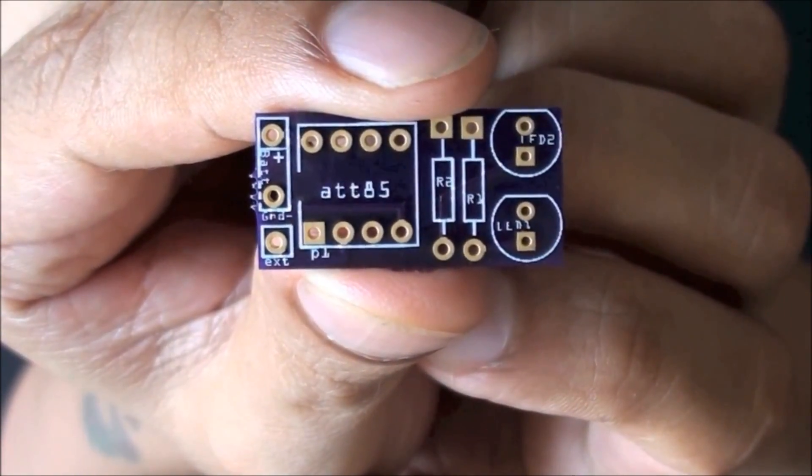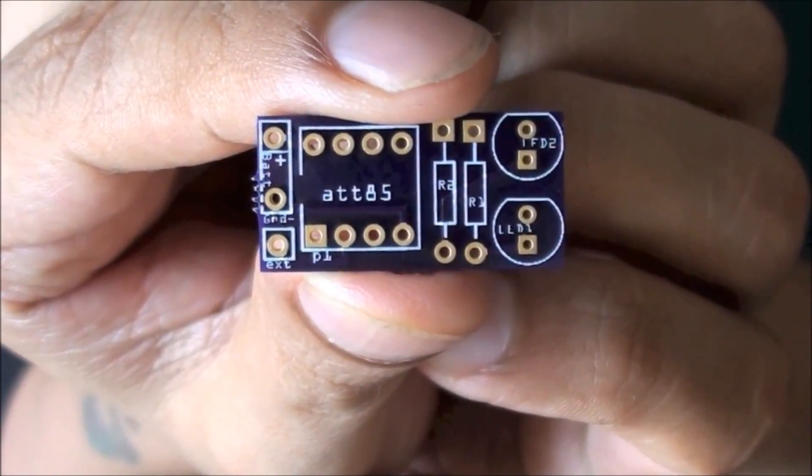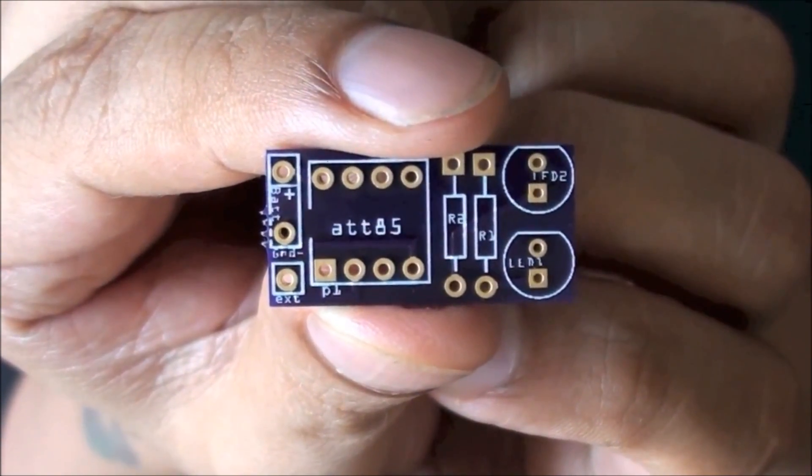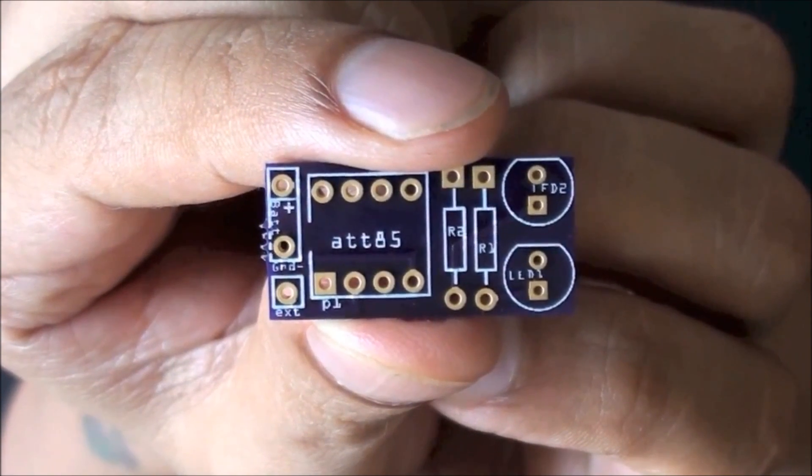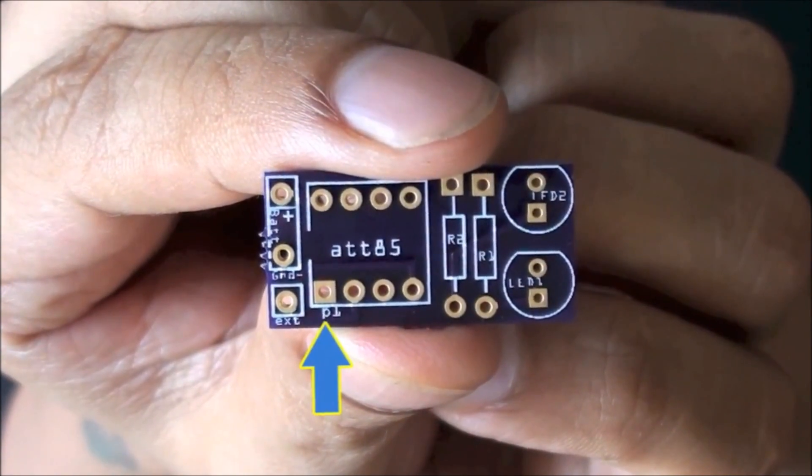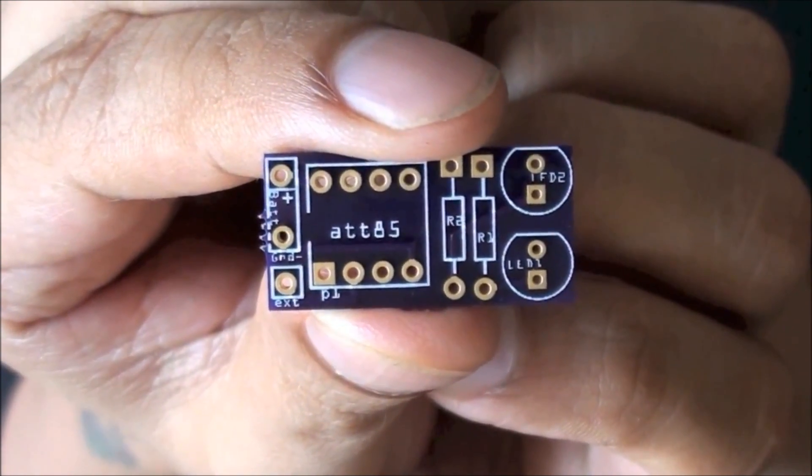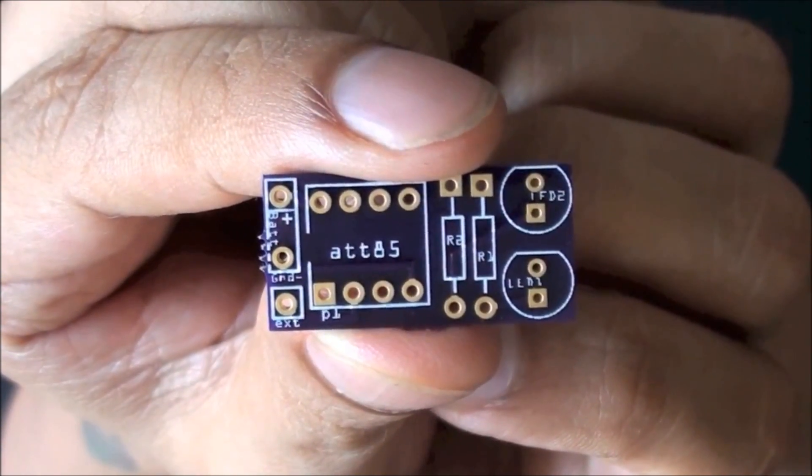The most important part of the PCB is the area labeled ATT85. This area consists of a square area with eight pin holes. All of them are circles except for one. The square pin is marked with P1. We will be aligning one of the pins on the microcontroller with this pin.